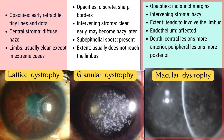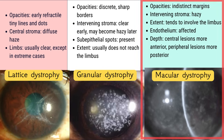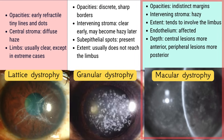In macular corneal dystrophy, the stromal opacities are grayish-white with indistinct margins, and the intervening stroma appears hazy even in early stages. The lesions often extend towards the limbus. Unlike other stromal dystrophies, Descemet's membrane and the endothelium can also be affected. Central lesions are located more anteriorly in the stroma, while peripheral lesions are deeper. Additionally, macular dystrophy is autosomal recessive, whereas the other two are autosomal dominant. The other two are TGF-beta-1 related, whereas macular dystrophy is non-TGF-beta-1 related.